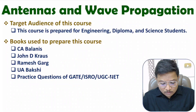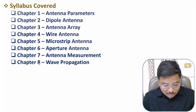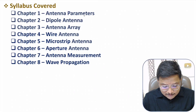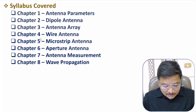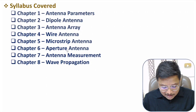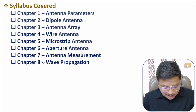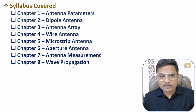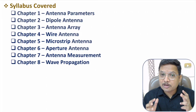If you see how the syllabus is structured for this course, there are in total eight chapters. The first chapter is based on antenna parameters. The second chapter is based on dipole antenna. The third chapter is based on antenna array. The fourth chapter is based on wire antennas. The fifth chapter is about microstrip antenna. The sixth chapter is based on aperture antenna. The seventh chapter is about antenna measurement. The last chapter is based on wave propagation. This is a comprehensive course where you will be learning all the basic fundamentals based on antennas.